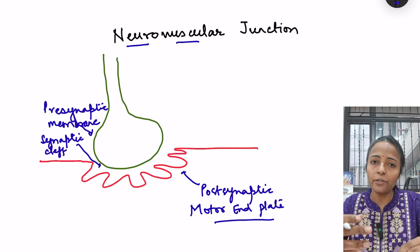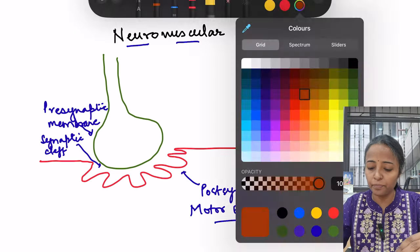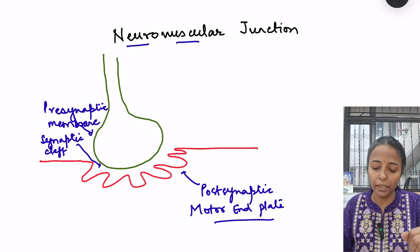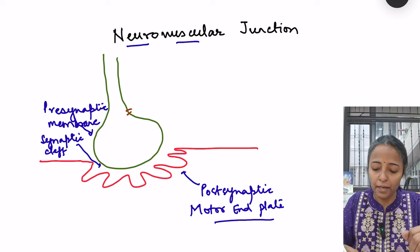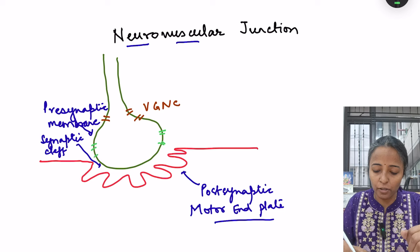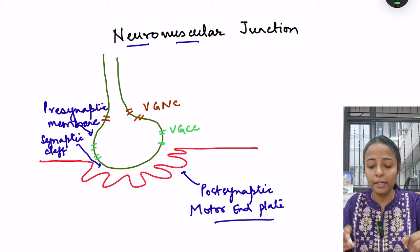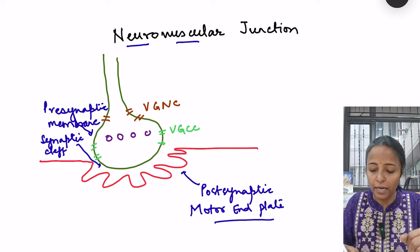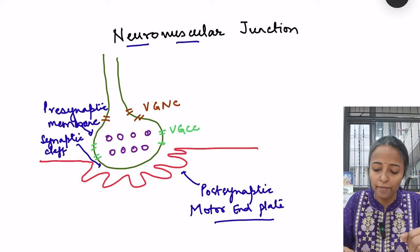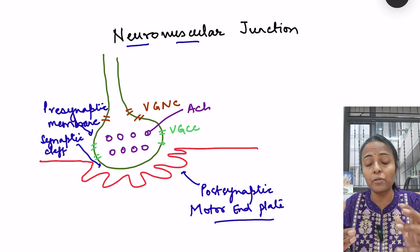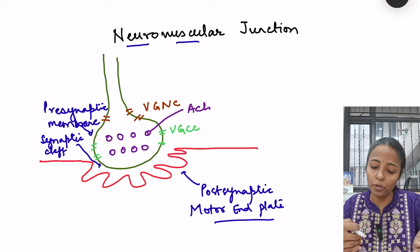Regarding the characteristic features of these membranes: the presynaptic membrane is formed by the neuron terminal and contains voltage-gated sodium channels and voltage-gated calcium channels. Inside the nerve terminal we have synaptic vesicles, and within those synaptic vesicles we have acetylcholine. Acetylcholine is a neurotransmitter involved in the transmission of nerve impulses from the neuron terminal to the muscle.